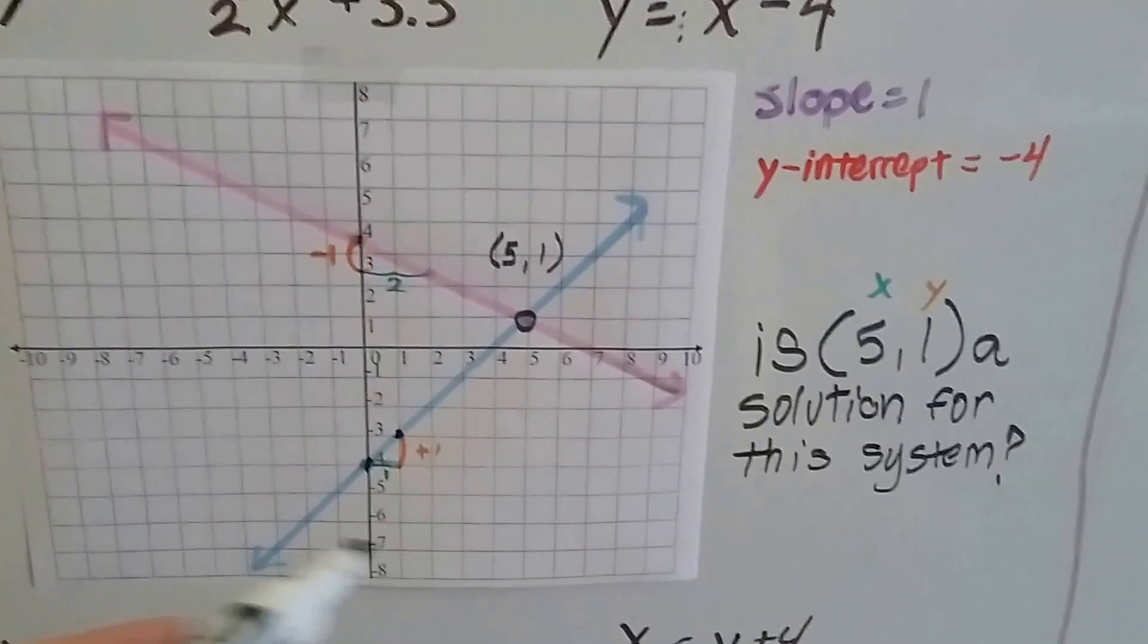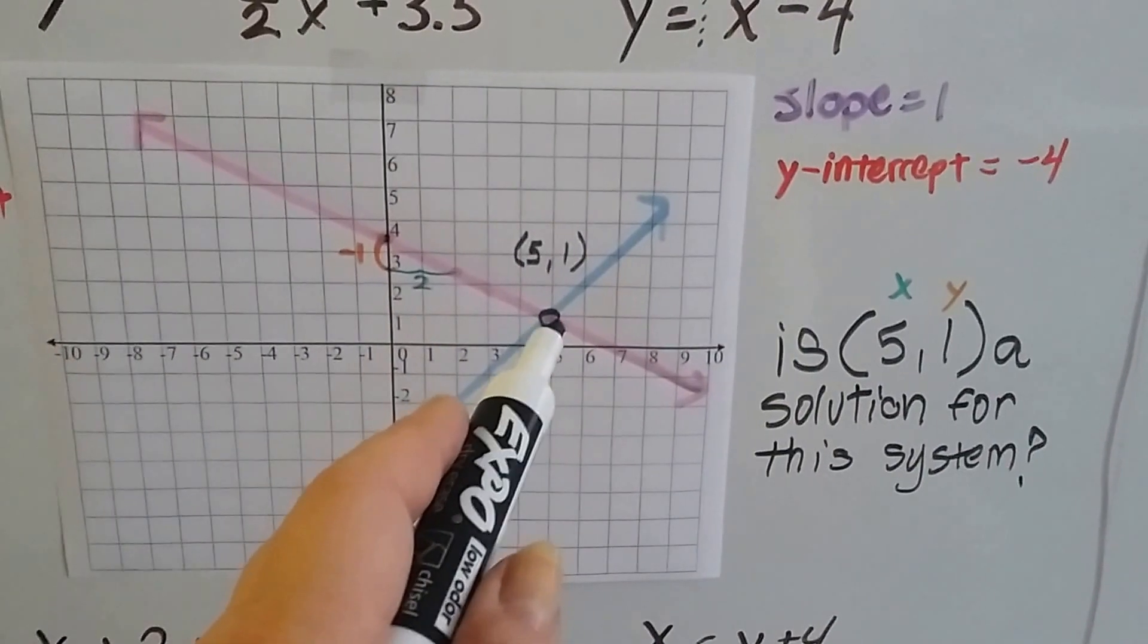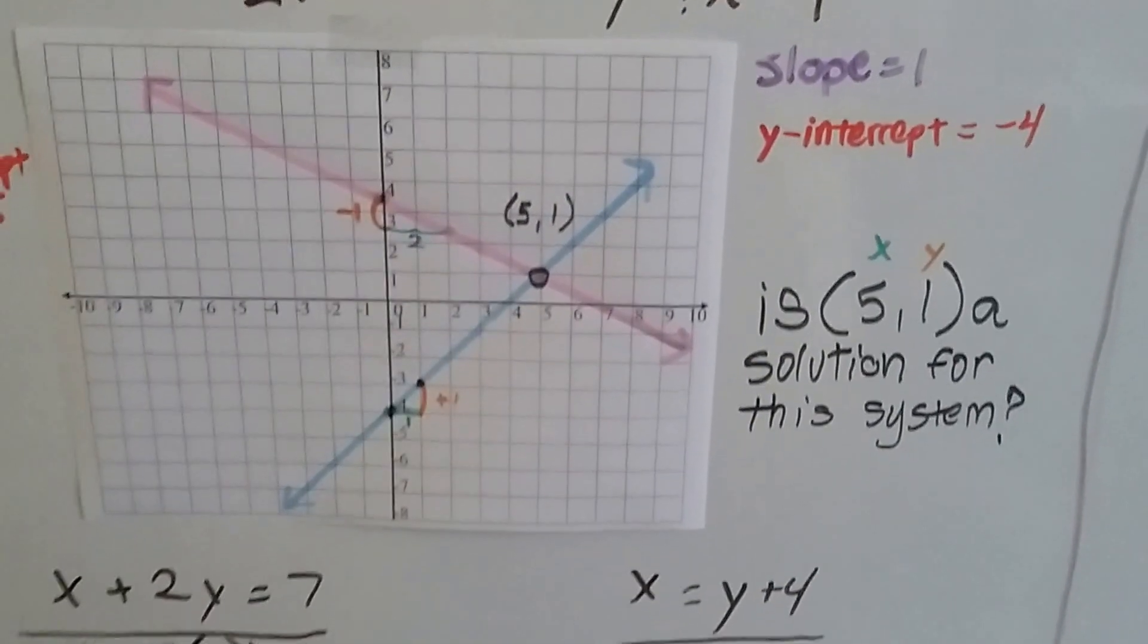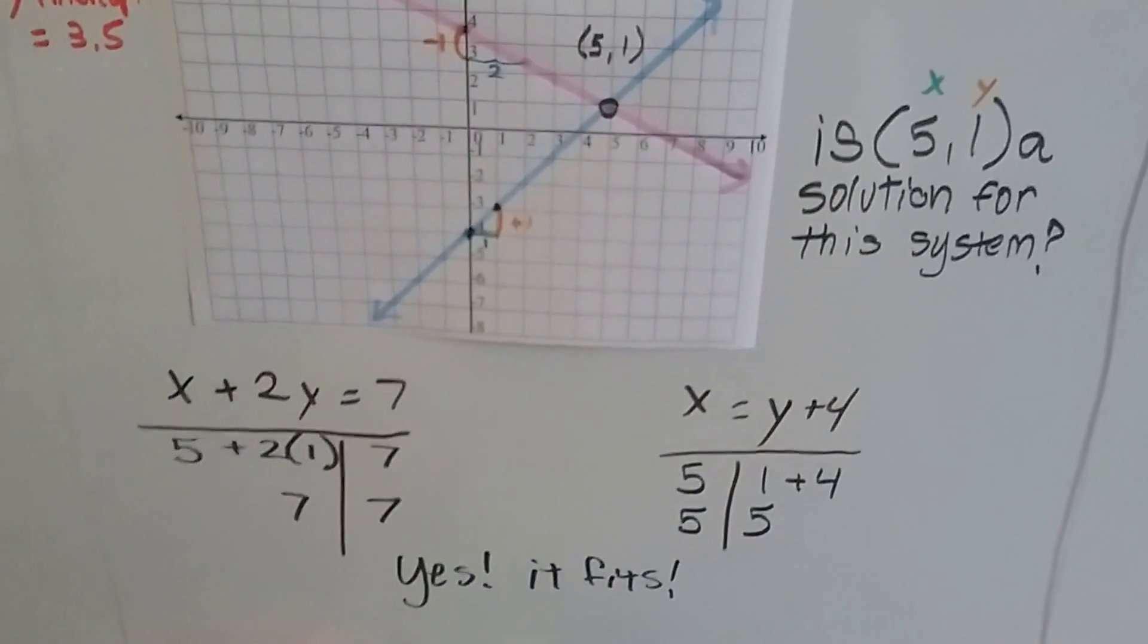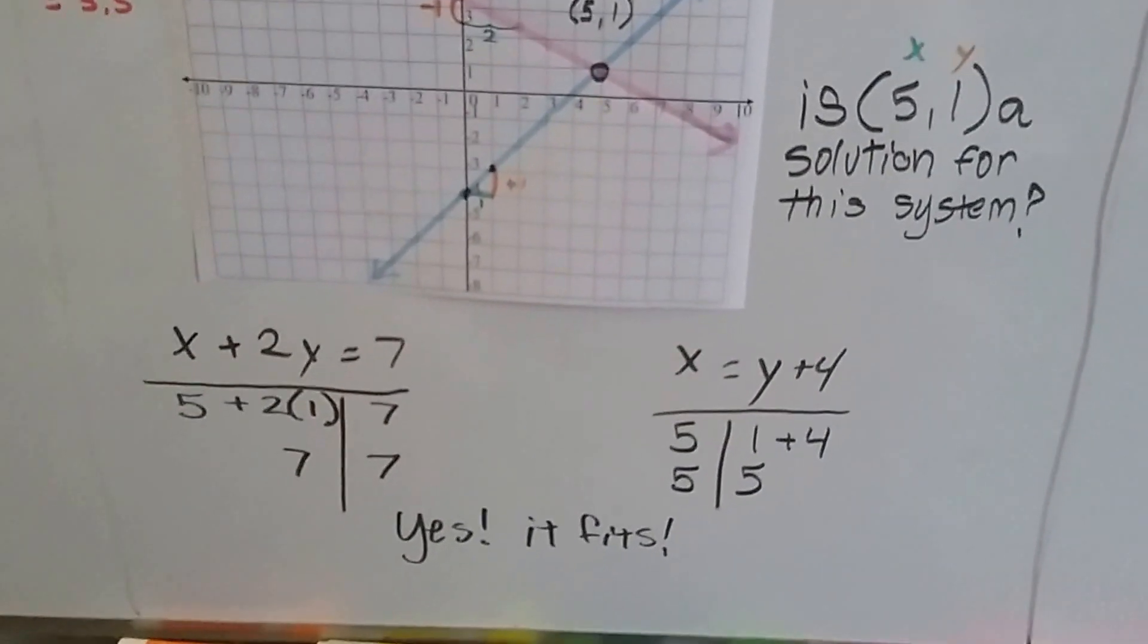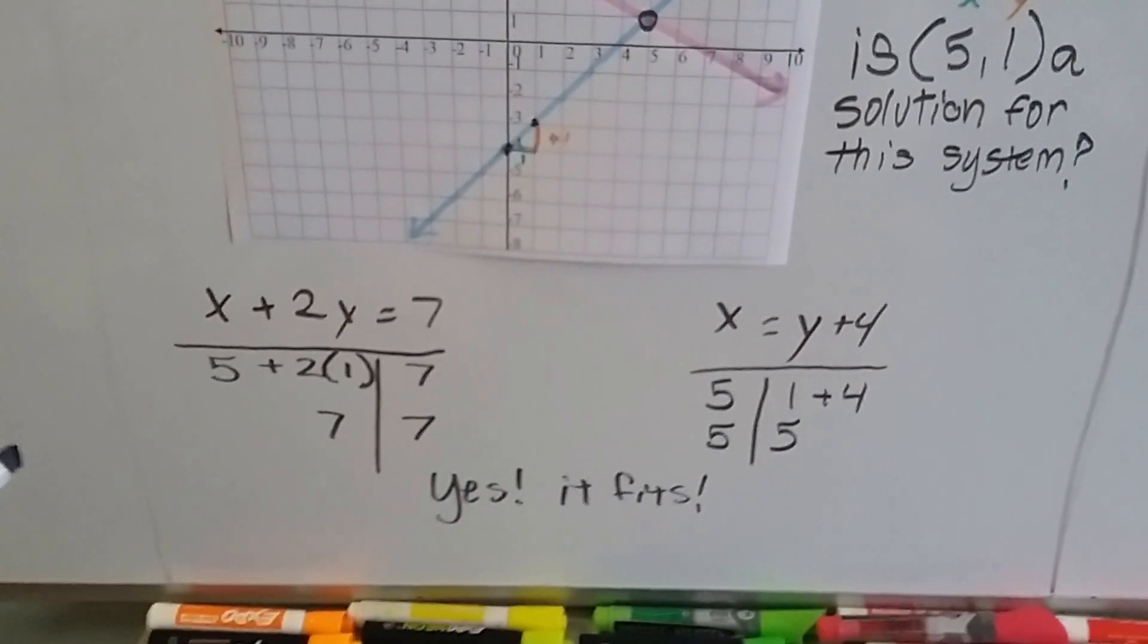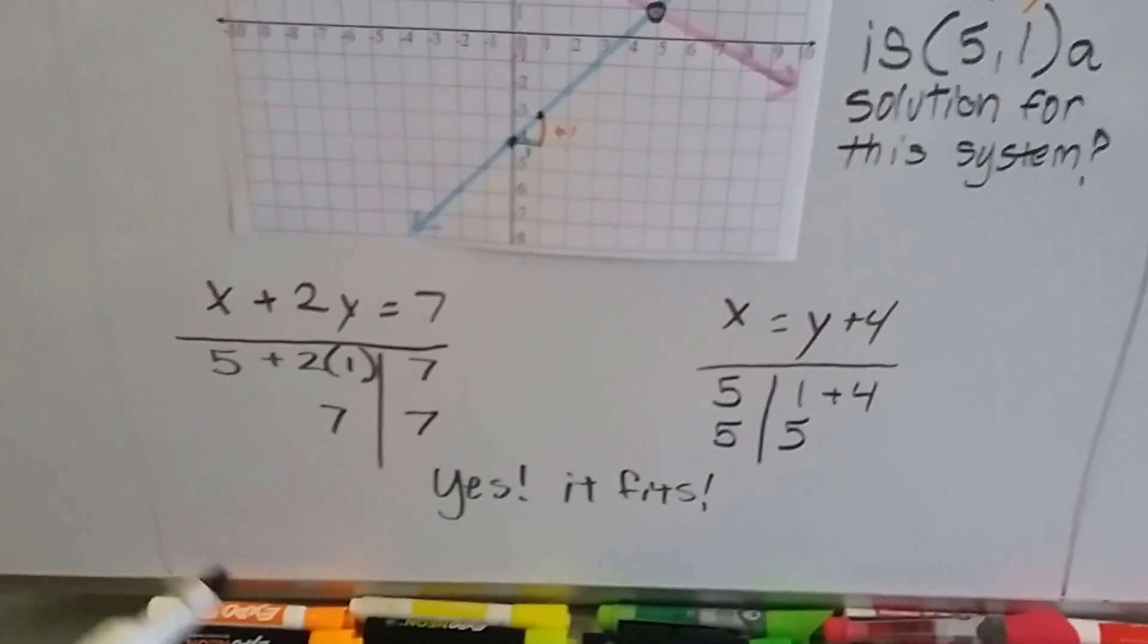Where do they intercept? They intercept at x for 5 and 1 for y. So 5 and 1, that should be a solution for this system. So we plug in the 5 as x and the 1 for y into both equations to see if it makes them both true. And yes, it does.